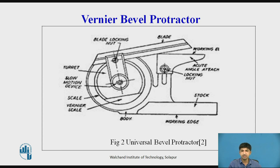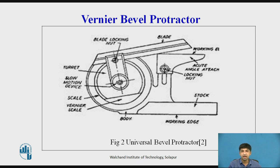The body of the Vernier Bevel Protector is designed so that its back is flat with no projections beyond it. The flatness is tested by checking the squareness of the blade with respect to the base plate when the blade is set at 90 degrees. The base plate is attached to the main body, and the adjustable blade is attached to a circular plate containing the Vernier scale. The main scale, graduated in degrees, is provided on the main body. The adjustable blade rotates freely about the center of the main scale and can be locked in any position.